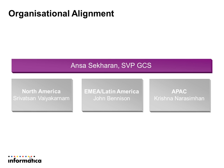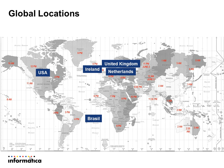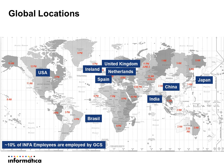GCS, or Global Customer Support, has three different regions: North America, EMEA, Latin America, and Asia-Pacific. Our support centers are in the following places: the US, Brazil, Ireland, United Kingdom, Netherlands, Spain, India, China, and Japan. AddressDoctor-designated engineers are in the USA, the Netherlands, and in India.